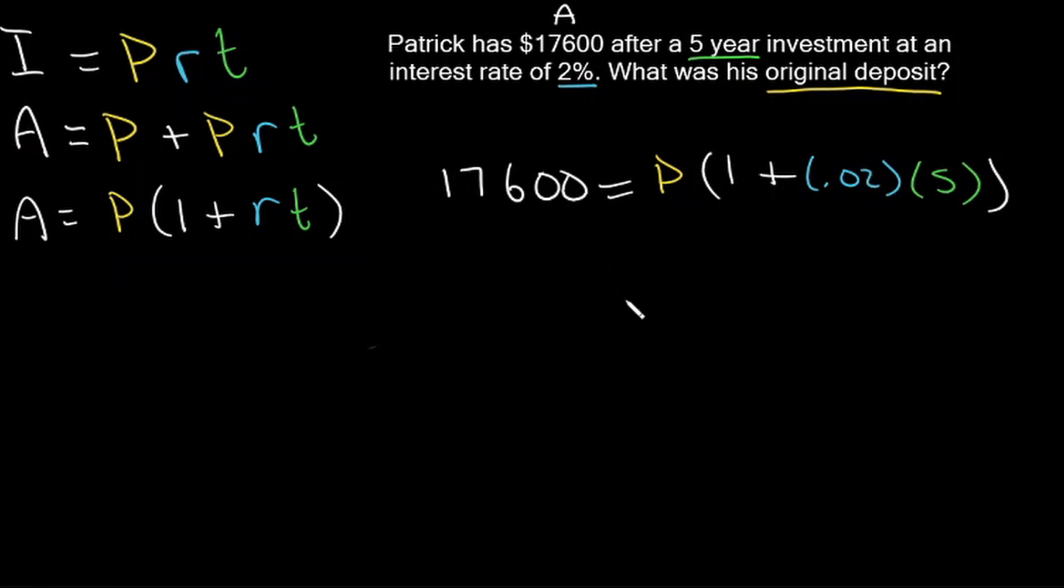So let's simplify this and solve for our principal. 0.02 times 5 is going to be 0.1. So 1 plus 0.1 is going to be 1.1.